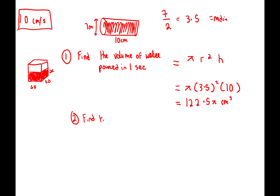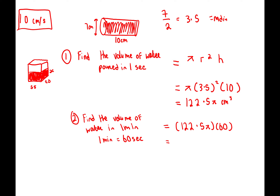We want the volume in one minute, which is 60 seconds. Multiply the volume per second by 60: 122.5π × 60 = 7,350π centimeters cubed. That's how much water is going into the tank.